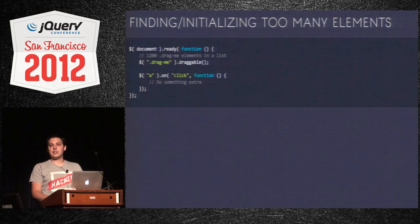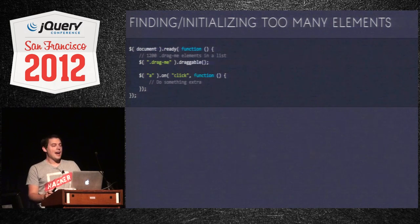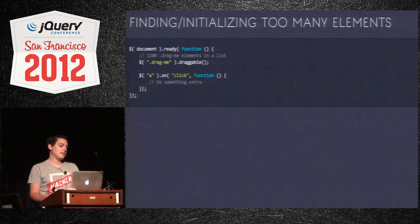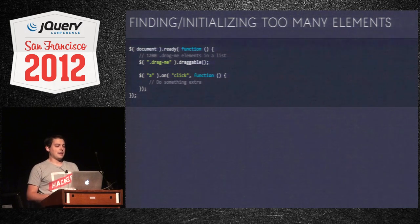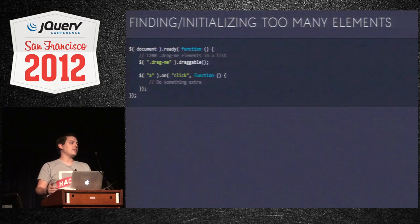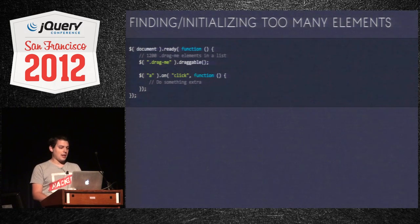Another problem is finding and initializing too many elements. If there are 1,200 items in a list and they're all drag-and-drop pieces, that's a lot of items to initialize when they're really only going to drag and drop three or four items in that session. Maybe you also have special link hijacking where you're binding to every single anchor on the page — creating separate events for all of them. Again, not tremendously efficient.